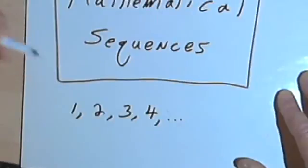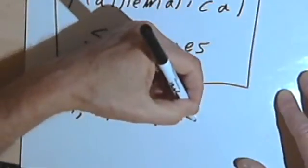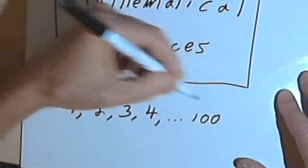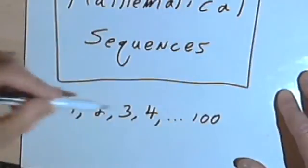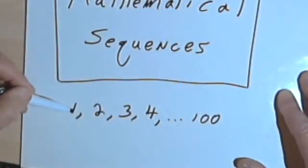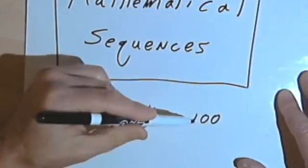If I want to show that it goes up to some high number, like let's say 100, then after the ellipsis, I'll write the last number of the sequence. So now I've got 1, 2, 3, 4, then the ellipsis, and then the 100. So that shows that basically my sequence starts at 1 and ends at 100.